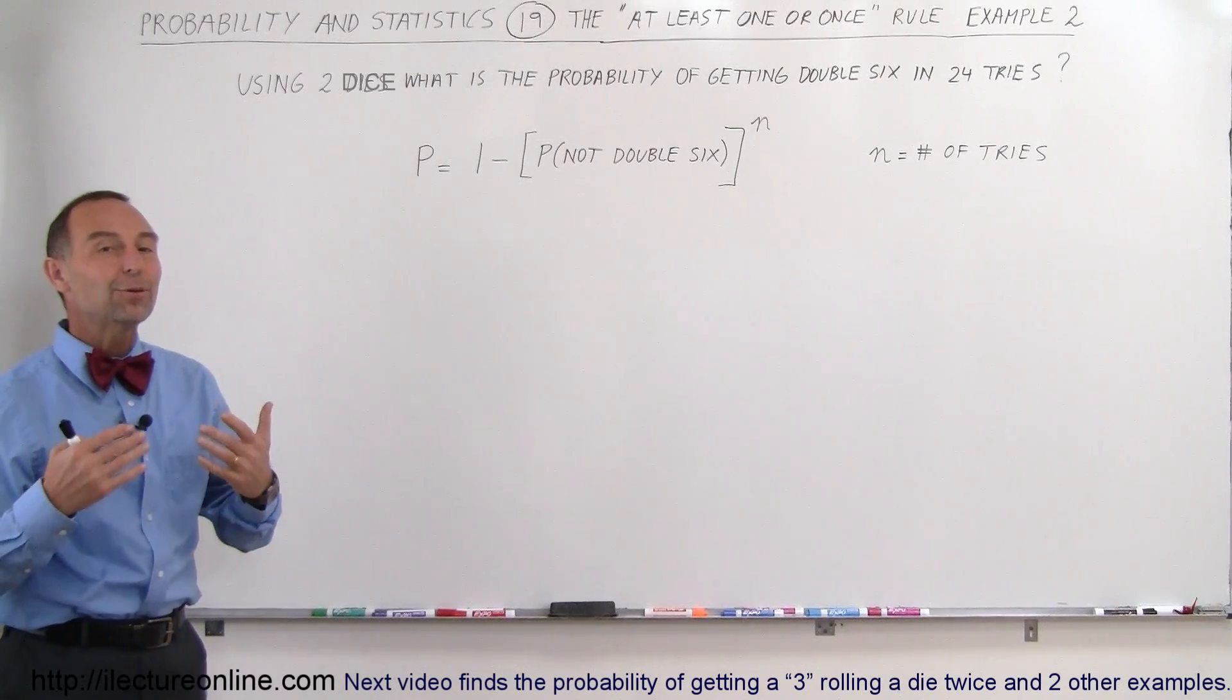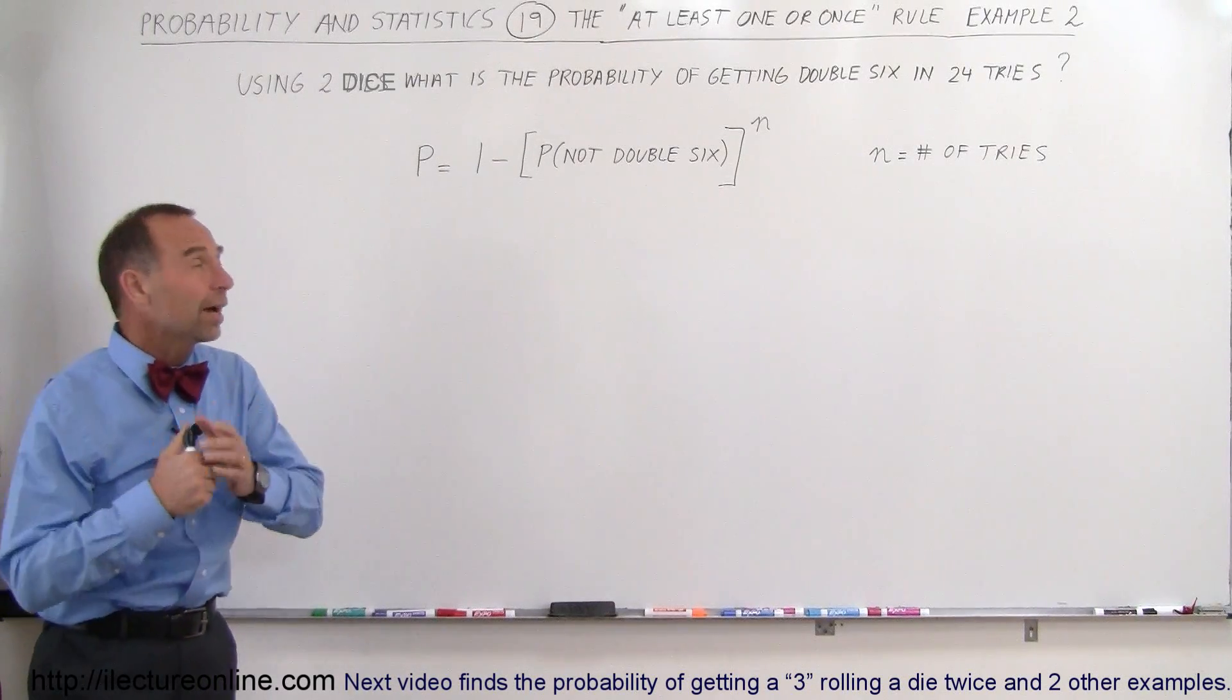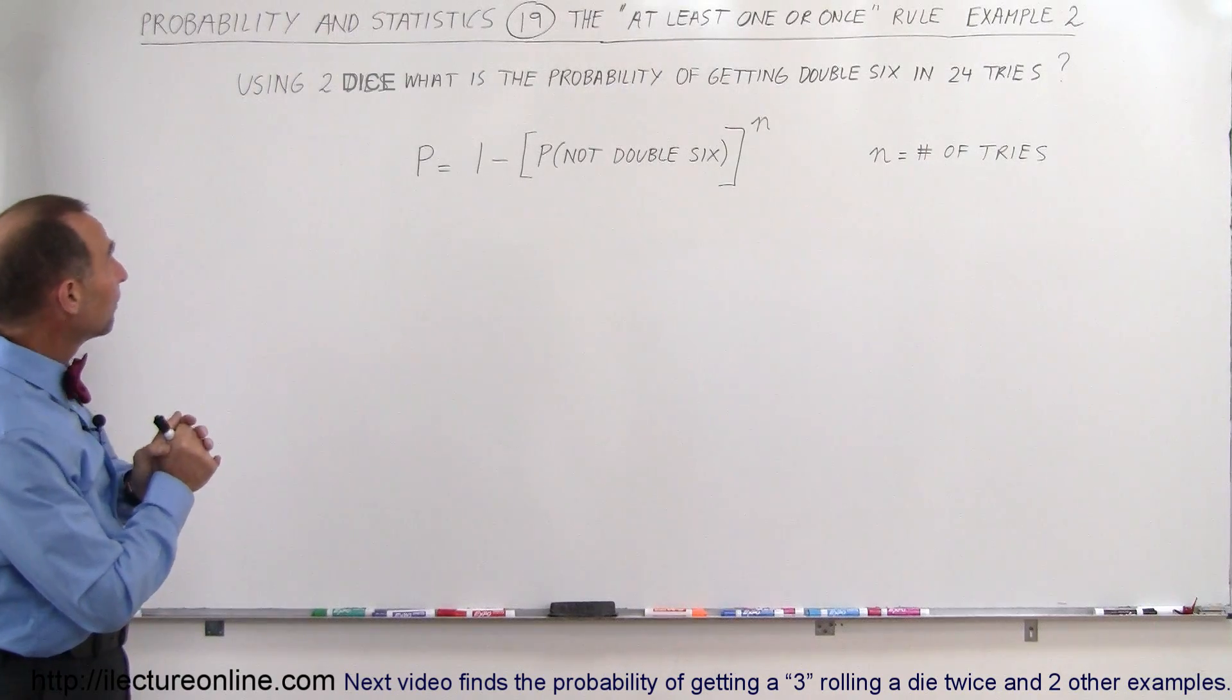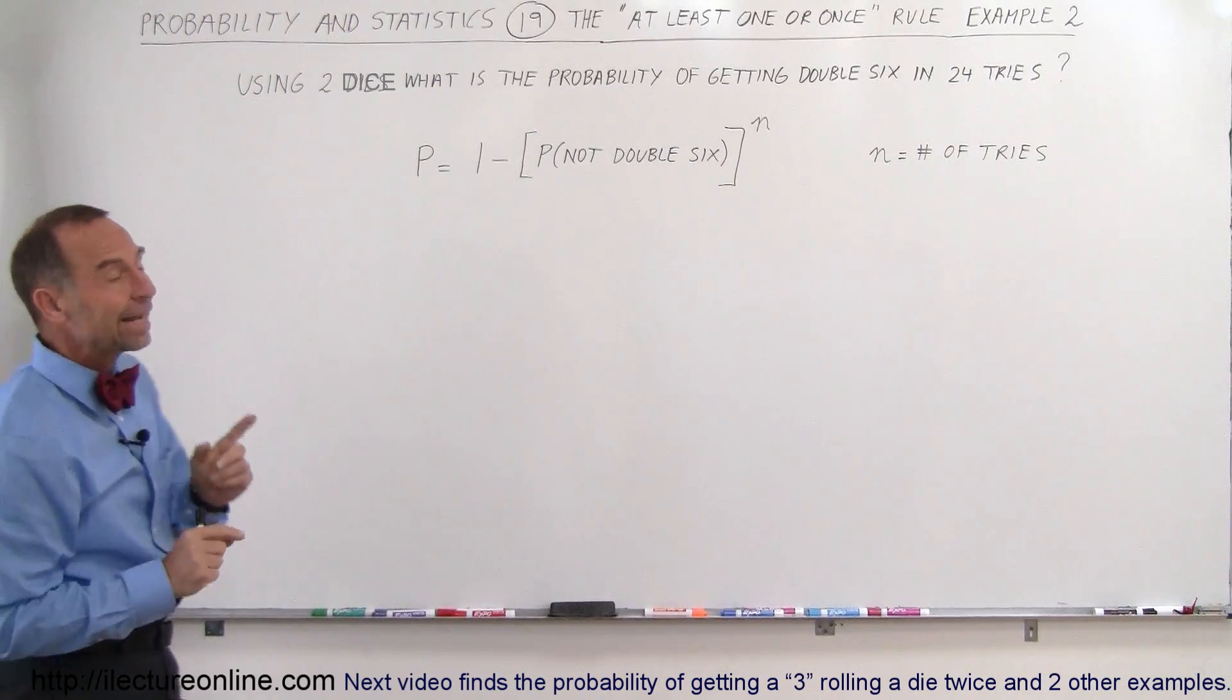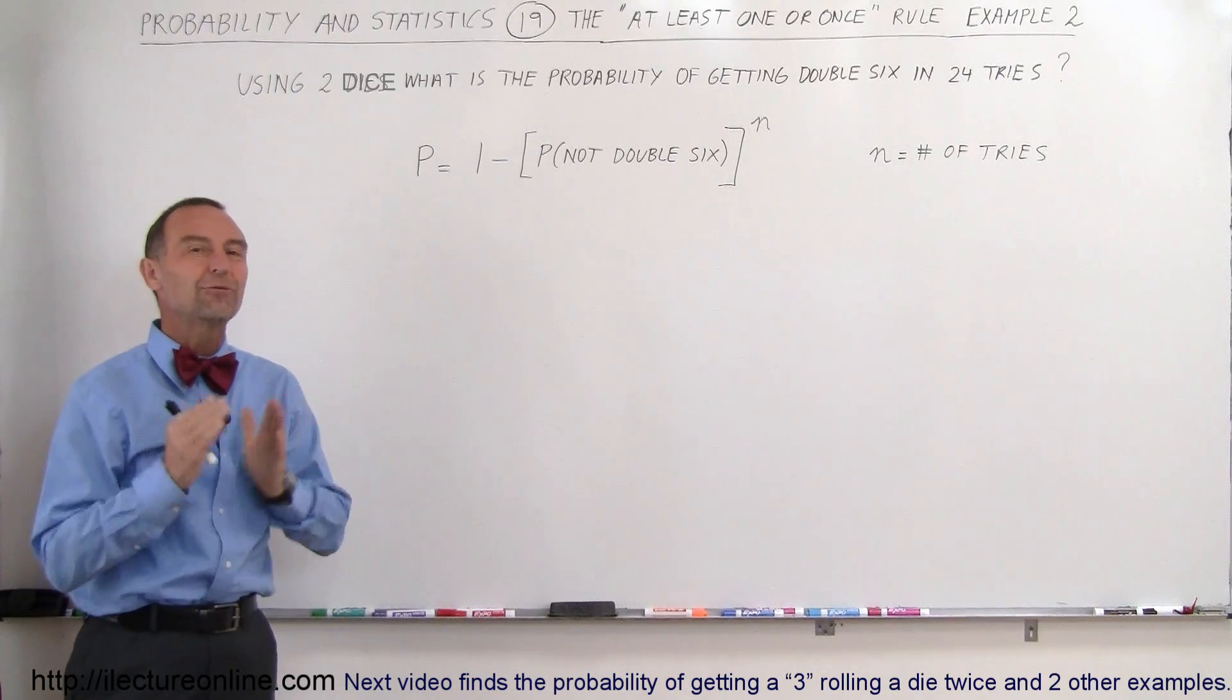Welcome to Electronline, and now let's see if we can do the same kind of problem with two dice. Here the attempt is, by using two dice, to find the probability of getting a double 6 in 24 tries.